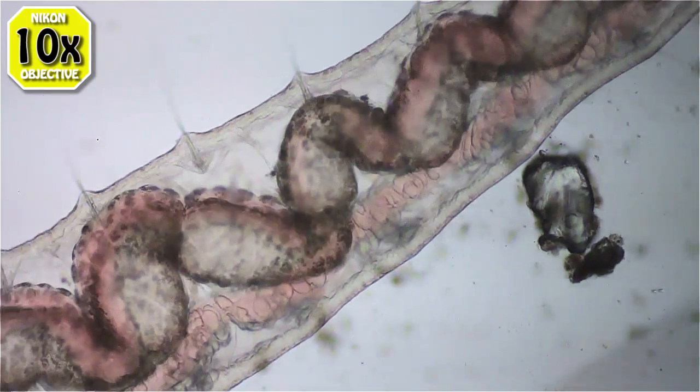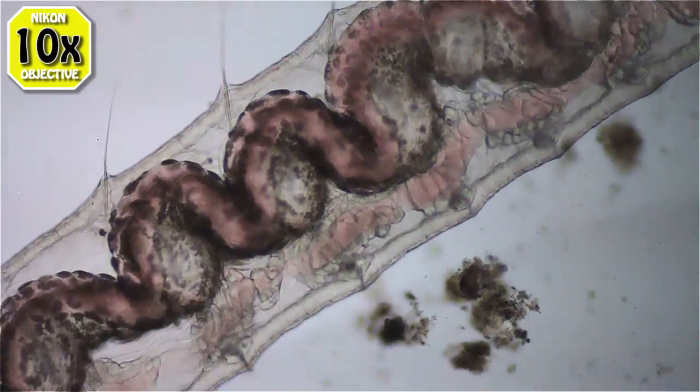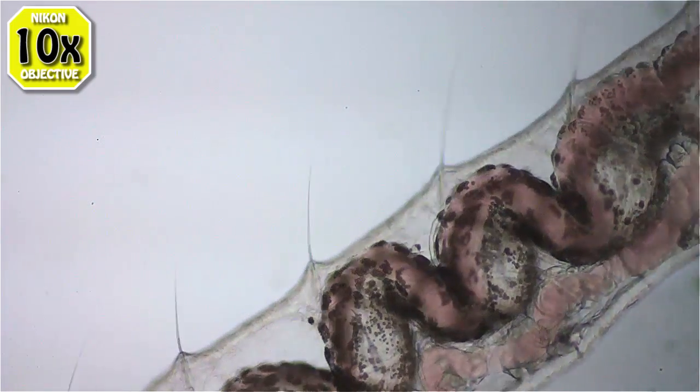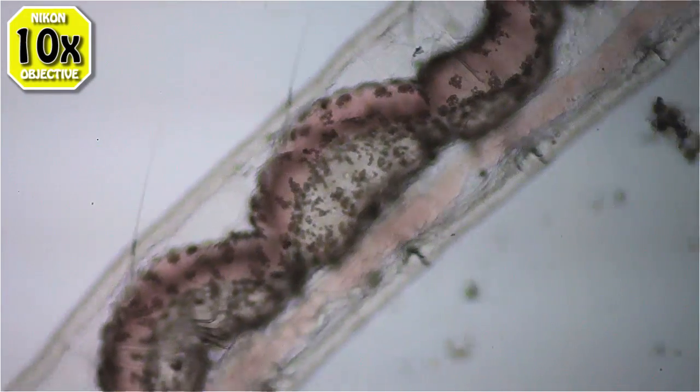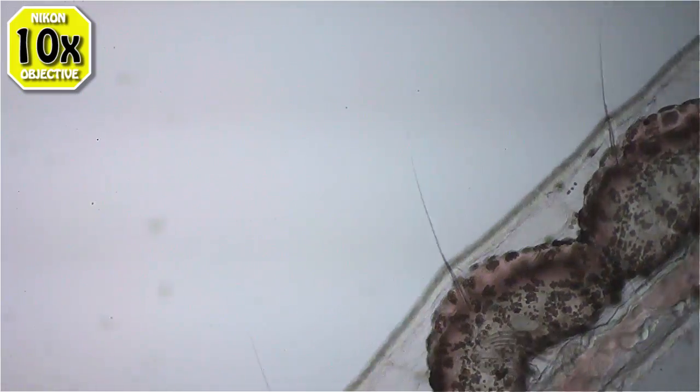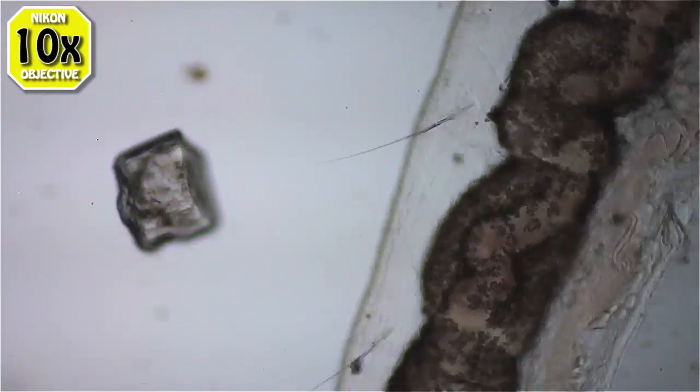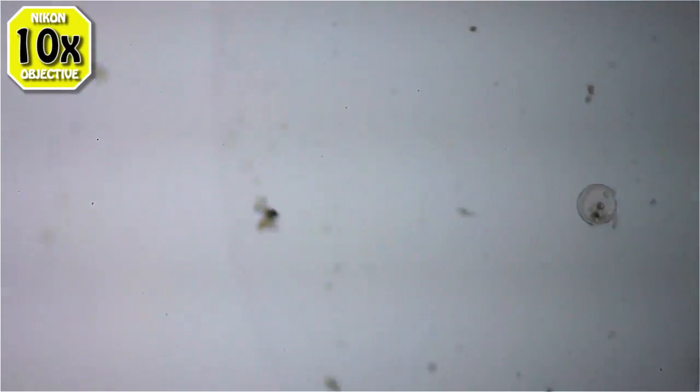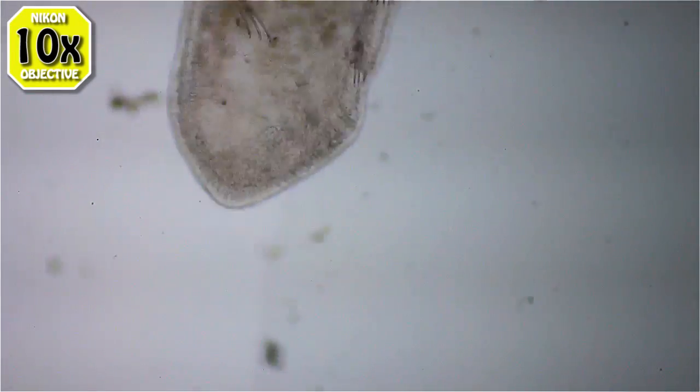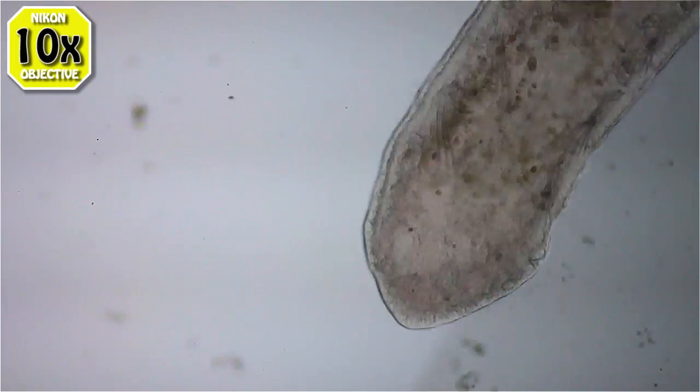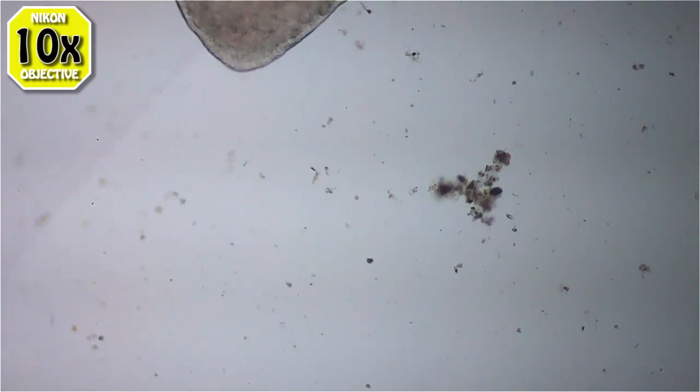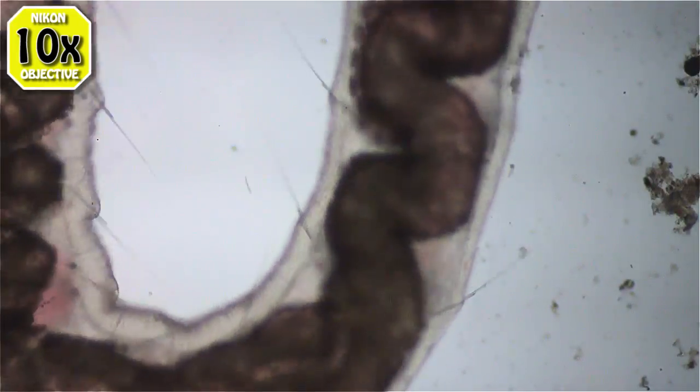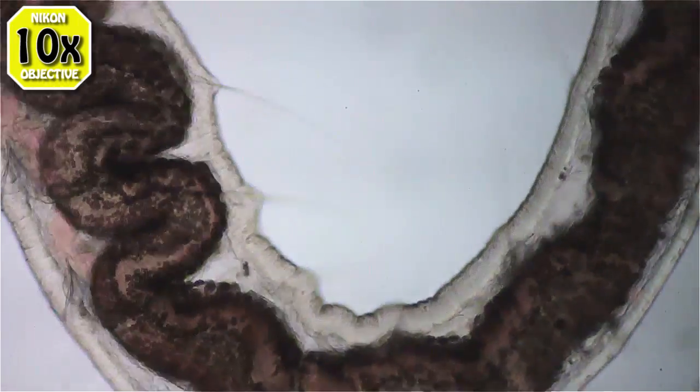I'm using a Nikon 10 power objective lens which makes it effectively 100 power by the time it hits the camera. I'm trying to find the head. There's the head. Very hard to see. I guess he has some sort of eyes or light sensors because he doesn't like the light. He's moving away from the light.